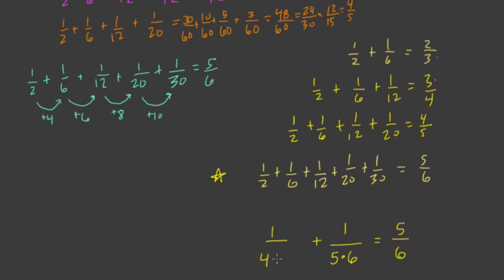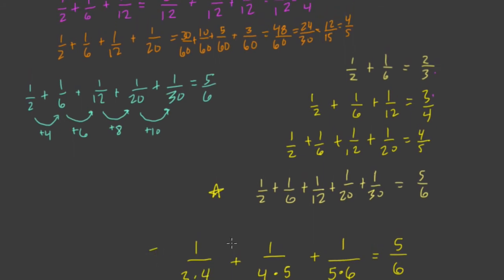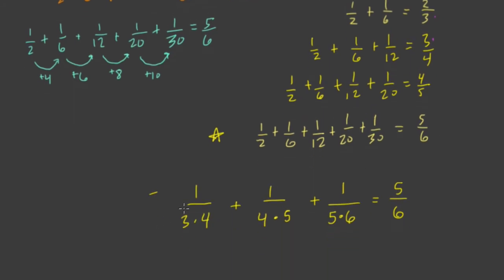What about one over twenty? That was just one over four times five. And then what about one over twelve? That's one over three times four. And what about one over six? One over six is just one over two times three. And what about one half? That's one over one times two.